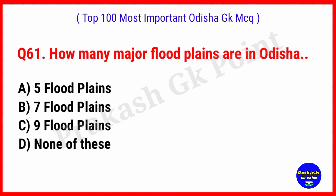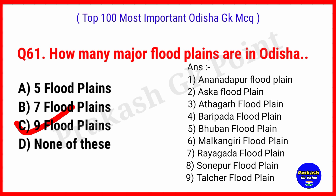How many major flood plains are in Odisha at present? Answer: Option C, 9 flood plains — Anandpur, Aska, Athgarh, Baripada, Bhuban, Malkangiri, Rayagada, Sonpur and Talcher flood plain.